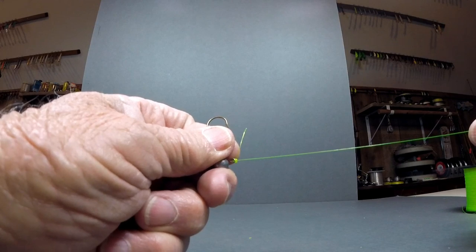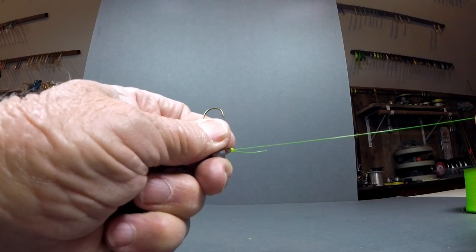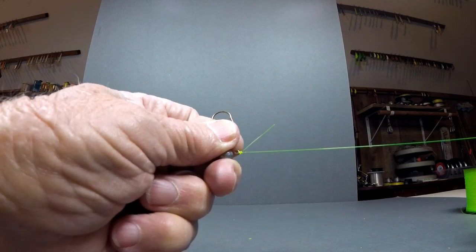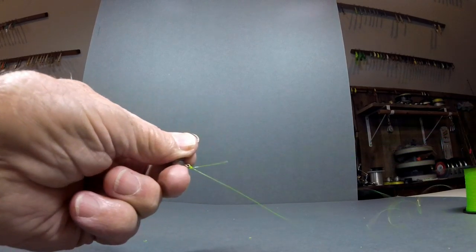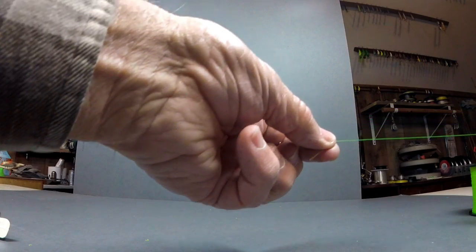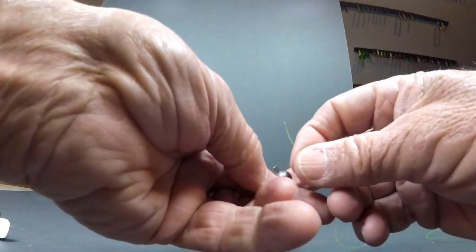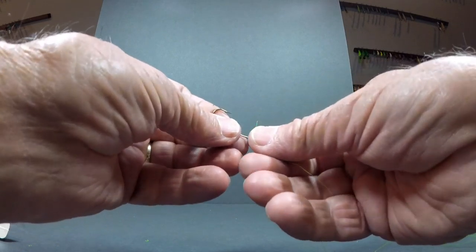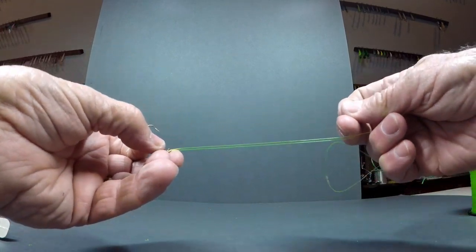We just tied this jig on the line using the manual method. Now watch what happens when we speed it up with the spinning method. Notice how much easier and how much faster I can tie the jig on the line using the spinning method.